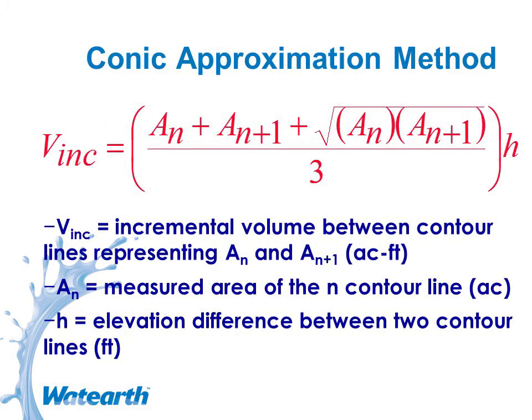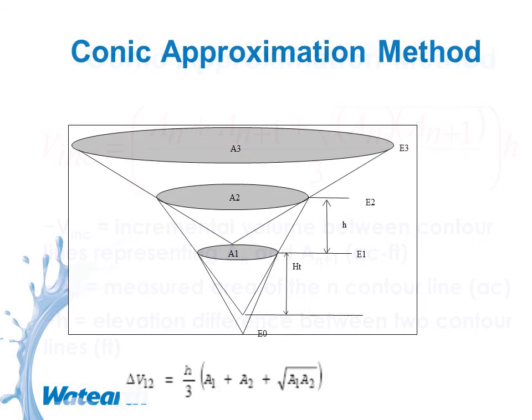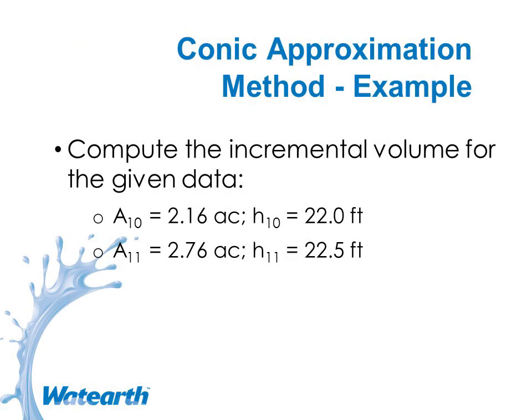The conic approximation method uses the same variables but a slightly more detailed formula, giving a more accurate representation. In this particular case, it gives us the exact same value.